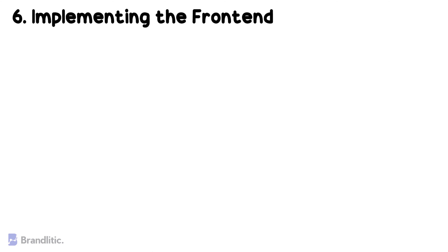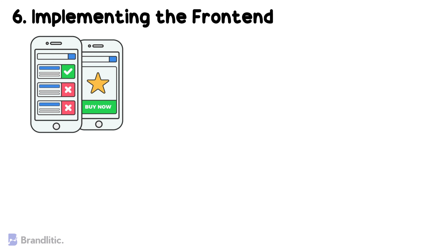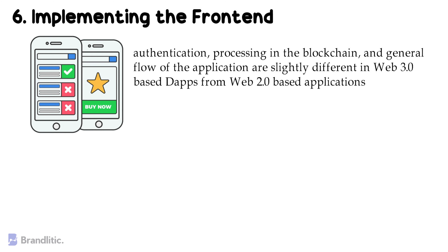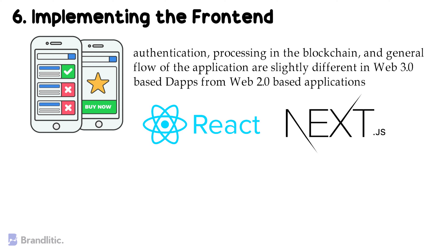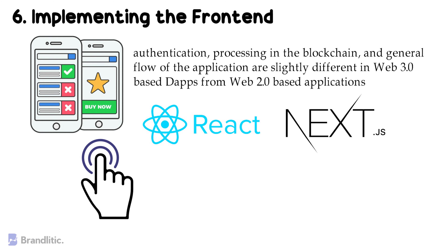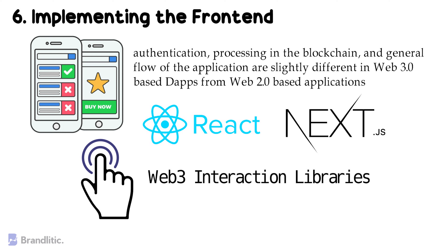Tech stack component #6: Frontend. The front-end technologies for Web3 and Web2 are the same — the only difference is reimagining the UX, since authentication, blockchain processing, and general application flow are slightly different in Web3 dApps. Good technologies to start with are React and Next.js, as most developers currently use these in the Web3 world. For the client-side backend, you'll need to understand how to interact with the blockchain using Web3 interaction libraries.